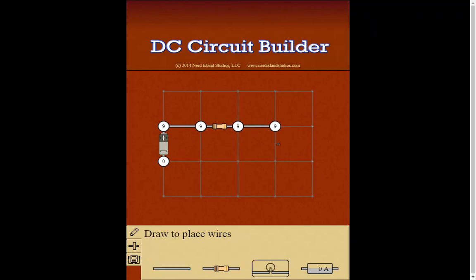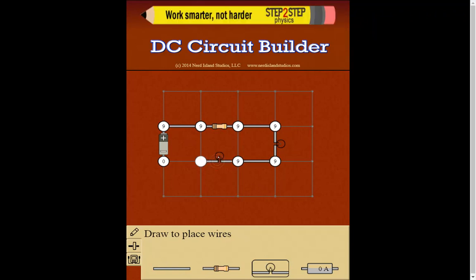I'm going to add a couple of light bulbs. One light bulb, put a piece of wire between that, and another light bulb. And then finally, when I complete the circuit, I see that current is flowing through, and the light bulbs are lit.